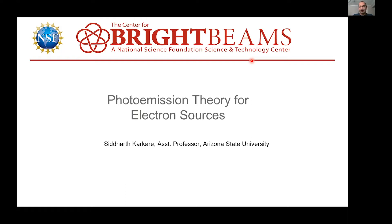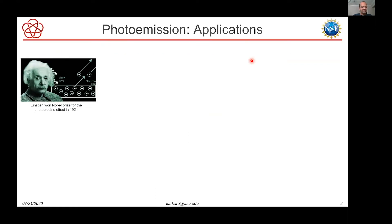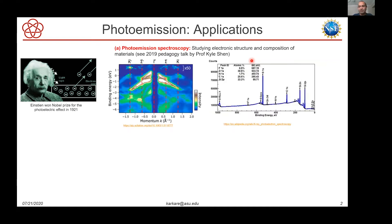Photo emission is a fairly complex phenomenon and it was explained by Einstein, who won the Nobel Prize for it in 1921. Since then it has been used for various things. The first and most important application I would say is photo emission spectroscopy, where you shine UV light or x-rays on materials and study the angle and energy of the emitted electrons to figure out the electronic structure or composition of a material.